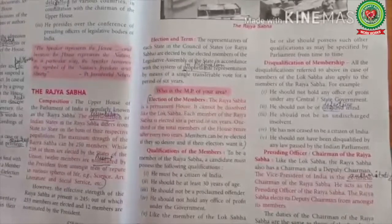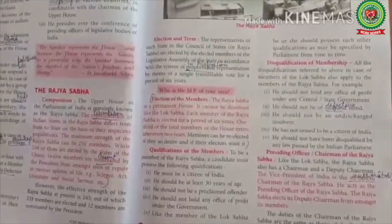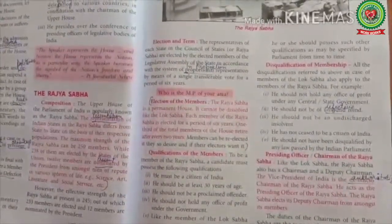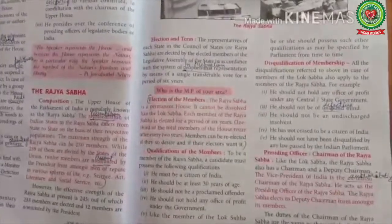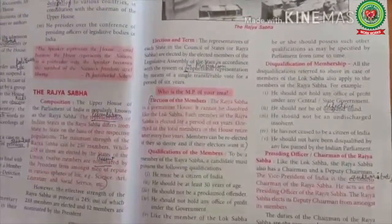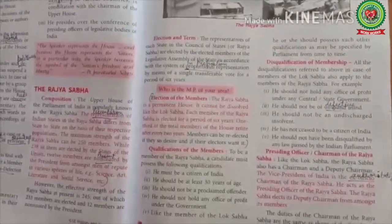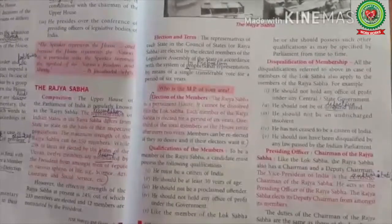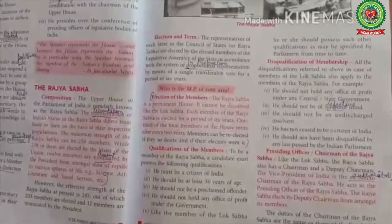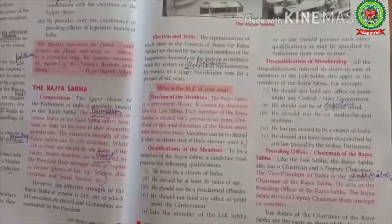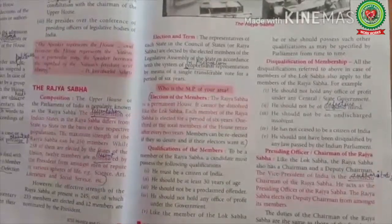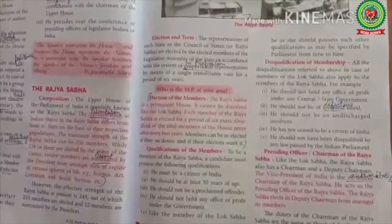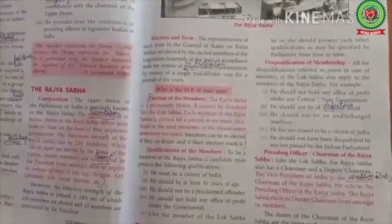The criteria for disqualification of members of the Rajya Sabha are the same as that of the Lok Sabha — if a person holds any office of profit, if a person is of unsound mind, if he is not a citizen of India, or if he is disqualified by or under any law made by parliament.